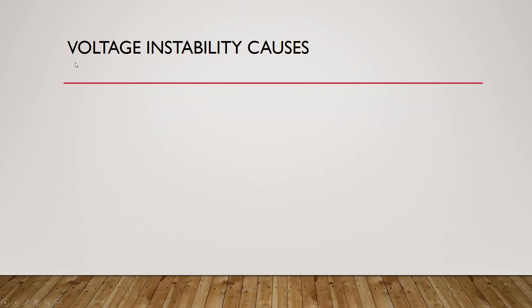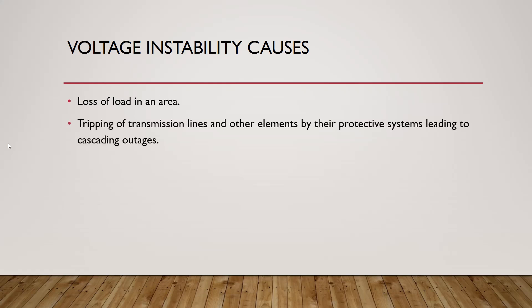In the case of voltage instability, the following consequences occur. Number one is loss of load due to a decrease in voltage. For example, for induction motors: when voltage decreases and the same torque is required, the induction motor will absorb more current to satisfy that torque demand, causing overheating. The thermal protection will then trip the induction motor.